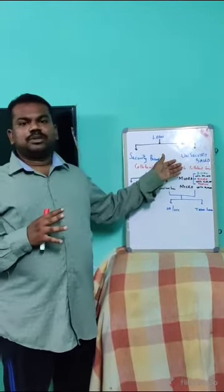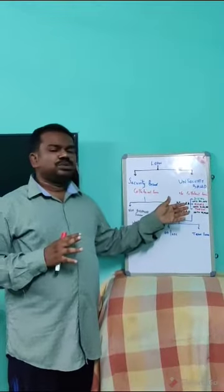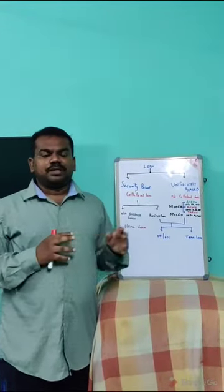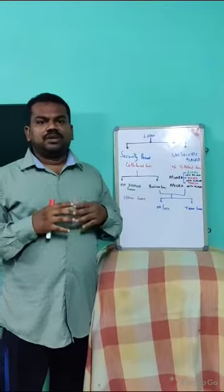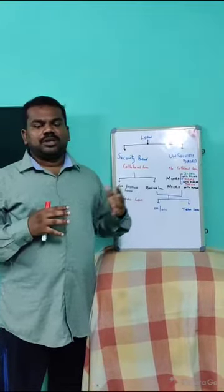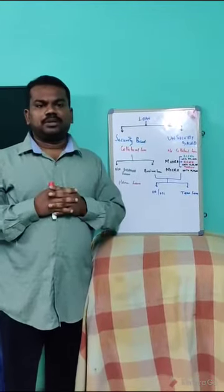If you are talking about unsecured loan, it is called Mudra Loan. There are three types. One is Shishu, Kishor, Tharan. I am going to go to a bank, but I don't have any security.